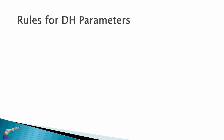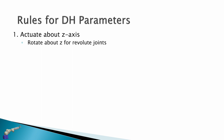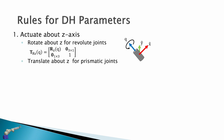There are rules for applying DH parameters. The first is that we actuate about the z-axis. For a revolute joint we just rotate about z, so in our first transform we replace theta with q. For a prismatic joint we translate about z, so in the second transform we replace the z component with q. We only actuate about z.